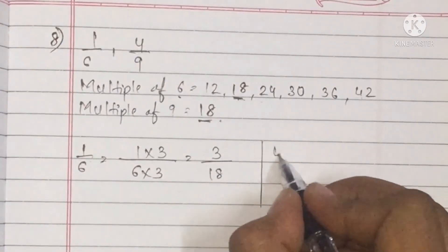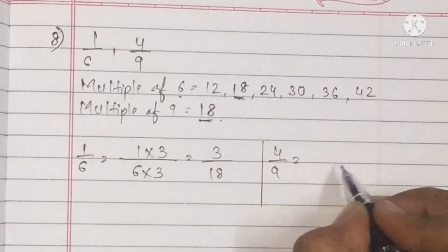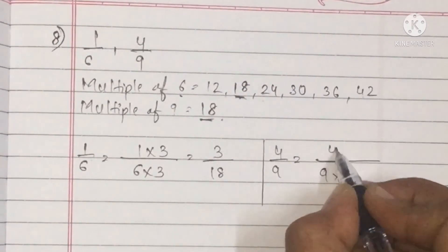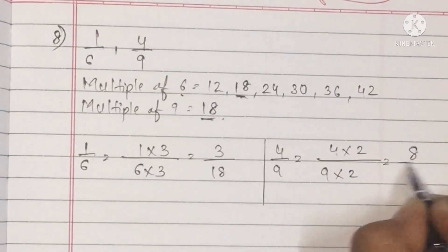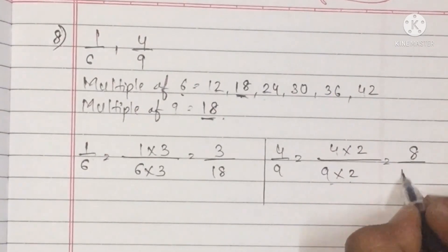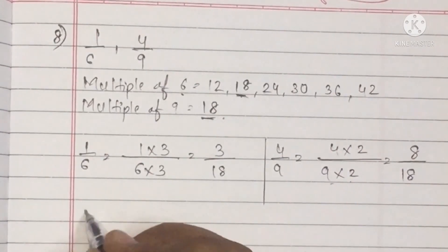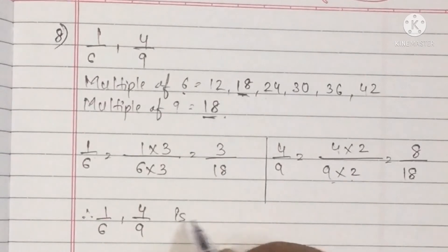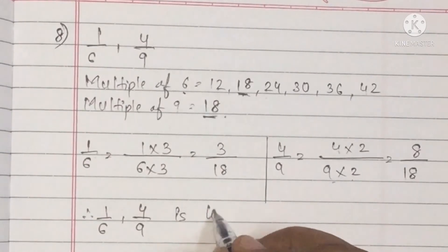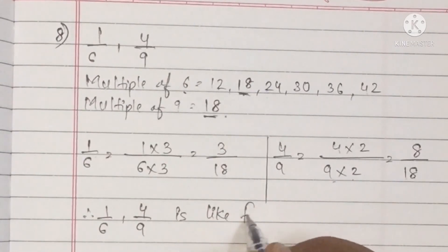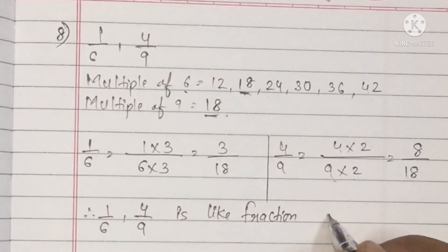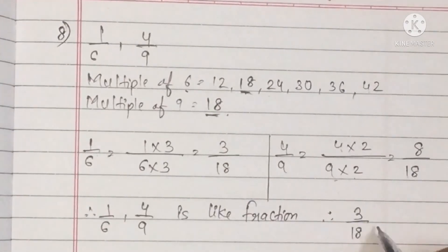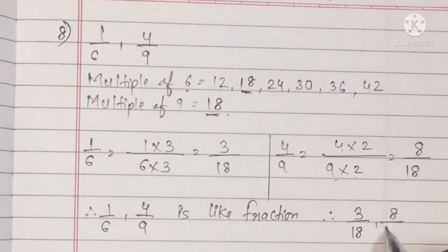Question number 8: 1 upon 6 and 4 upon 9. For 1 upon 6, multiply by 3: 1 three is 3 and 6 threes are 18. For 4 upon 9, multiply by 2: 4 twos are 8 and 9 twos are 18. So 1 upon 6 and 4 upon 9 become like fractions: 3 upon 18 and 8 upon 18.